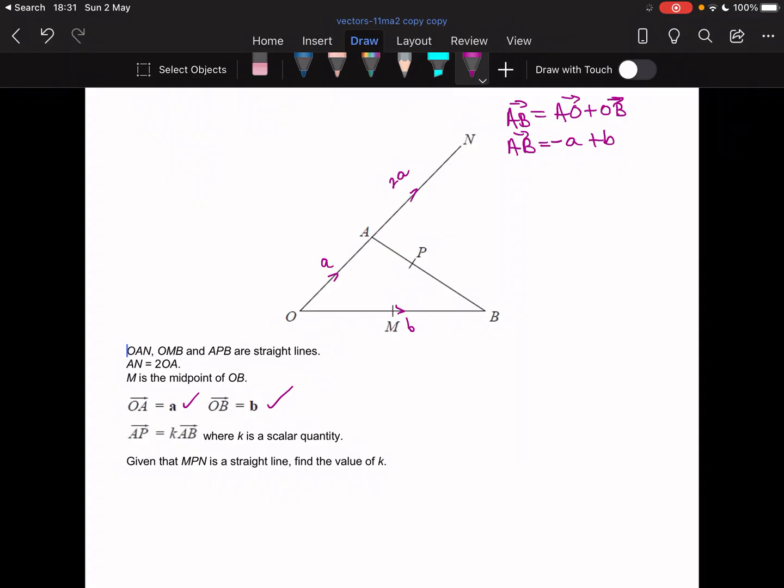Now, it's giving us this information that MPN is a straight line. So what I'm going to try to do is work out the whole line, MN, and then work out part of the line, which is MP. And I know that MN is going to be a multiple of MP.